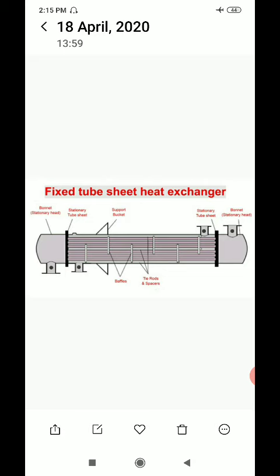It is used for higher pressure and temperature applications. It is generally used in chemical and refinery industry. It is used where even a slight mixing of fluids cannot be tolerated. The fixed tube heat exchanger consists of straight tubes that are firmly fixed to the tube sheet at both ends.